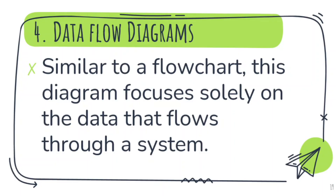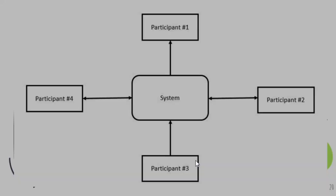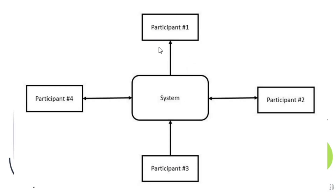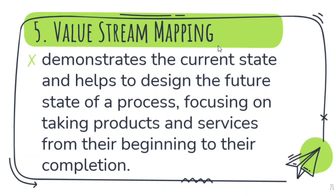The next type of business process map is the data flow diagram. It is similar to a flowchart, but this diagram focuses solely on the data that flows through a system. For example, it shows staff 1, employee 1, 2, 3, 4, and then what data flows — the data produced by each participant or the data coming out of the system.